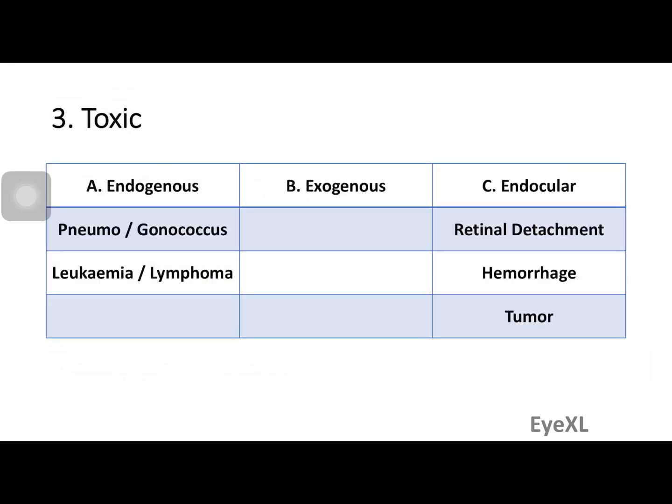Toxic uveitis is caused not by an organism but by a toxin. Endogenous sources include organisms like Pneumococcus or Gonococcus, which are toxin-producing — these toxins induce a uveitis reaction. Leukemia or lymphoma can cause uveitis either through tumor cells themselves or metabolic changes. Exogenous sources include talcum powder or foreign bodies — anything that irritates the uvea.